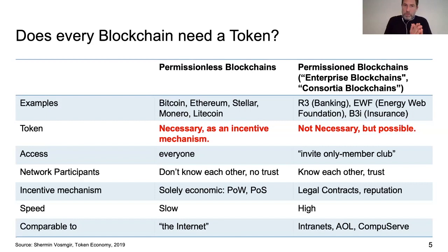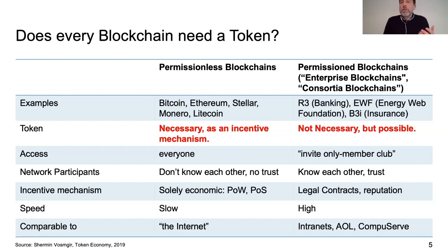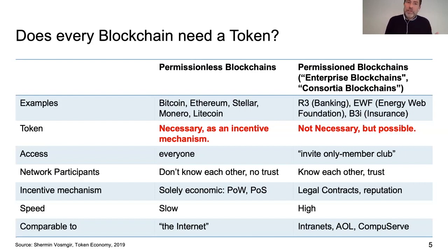For a permissionless blockchain, we do need a token as an incentive mechanism because we need to incentivize the people in the network to put in the work for the consensus. Otherwise, if there were no monetary incentive, people wouldn't be willing to supply the resources for getting consensus done. The incentive is solely economic — to get people to do the proof of work, proof of stake, or any other consensus mechanism.